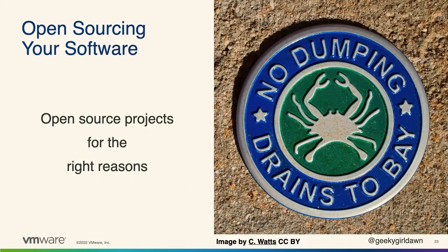If you want to open source a project because it has no users, it's old, it's crusty, and you don't want to maintain it anymore — please just don't do that. Dumping your project into the open source community and hoping that someone else will be dying to take over a piece of code you don't want is at best naive and generally makes your company look bad. Make sure you're open sourcing a project for the right reasons — for example, wanting to collaborate and innovate with other people is a good reason. If you're working on a project that needs to integrate with a bunch of other technologies, open sourcing it can make it easier for others to help you integrate with technologies you're less familiar with. But your company needs to be prepared to maintain that project over the longer term, just as you would with something under a proprietary license. It takes time and resources, so take that into account when building your strategies.